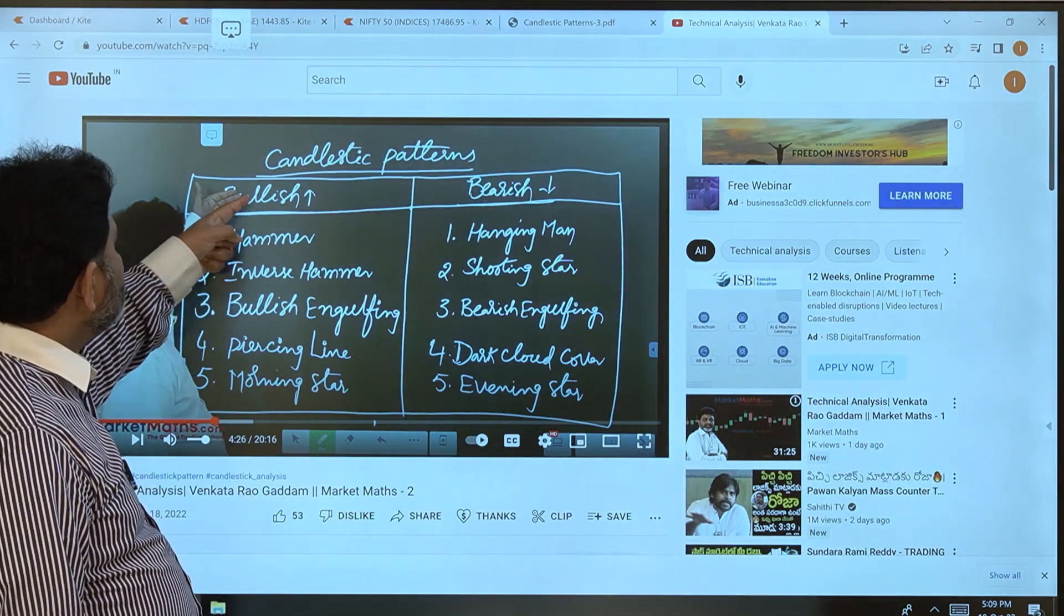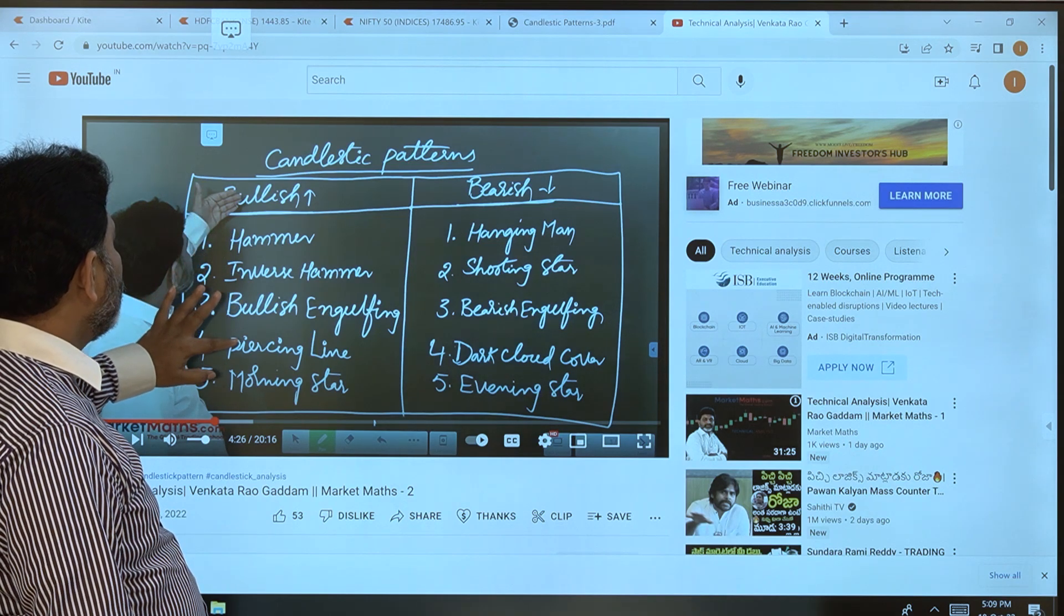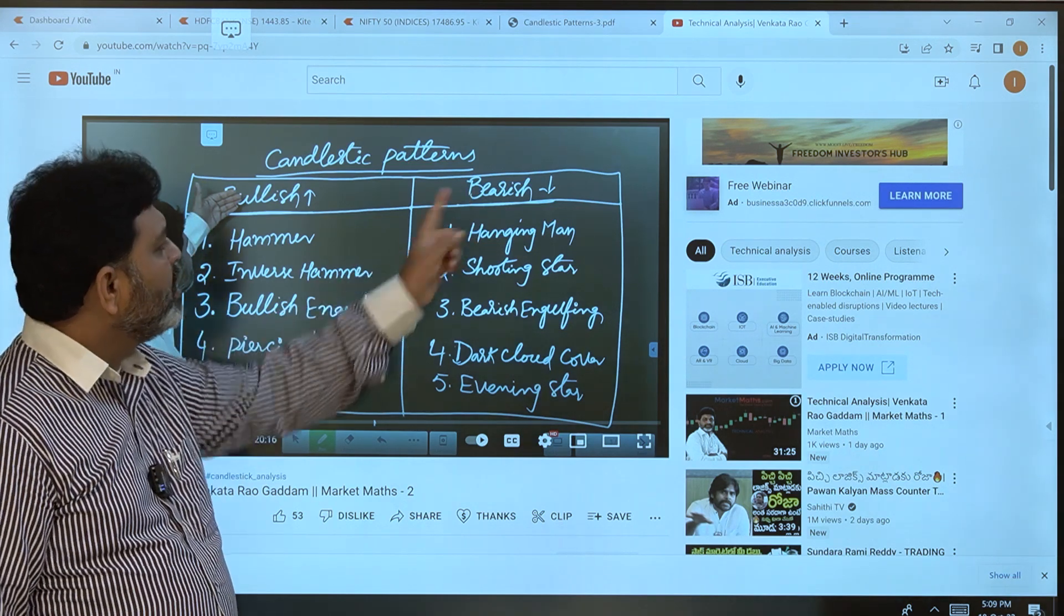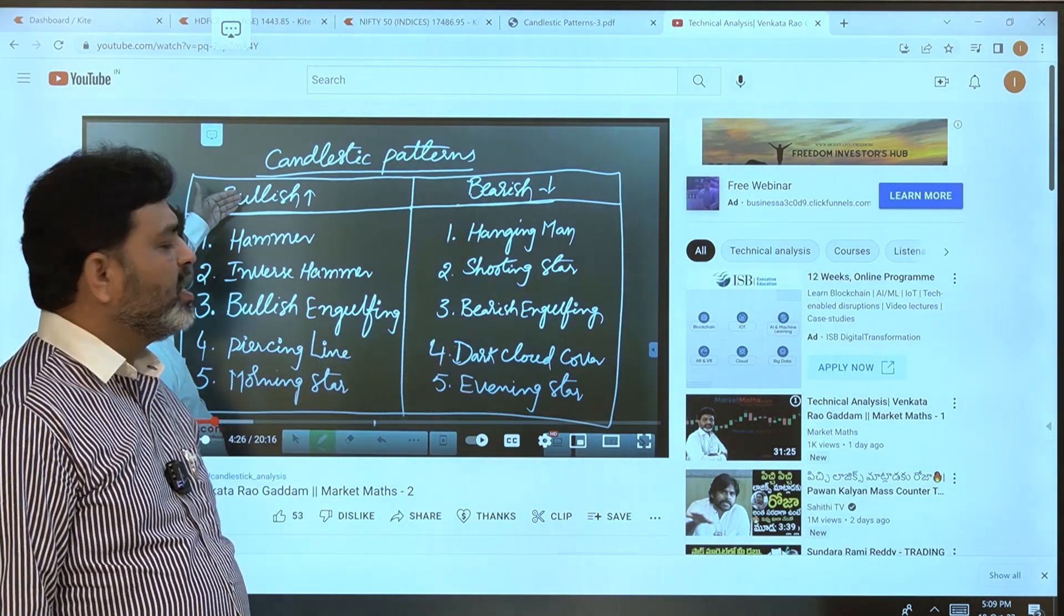Ten patterns will be discussed - five bullish patterns and five bearish patterns. The bullish patterns are hammer, inverse hammer, bullish engulfing, piercing line, and morning star. The bearish patterns are hanging man, shooting star, bearish engulfing, dark cloud cover, and evening star.